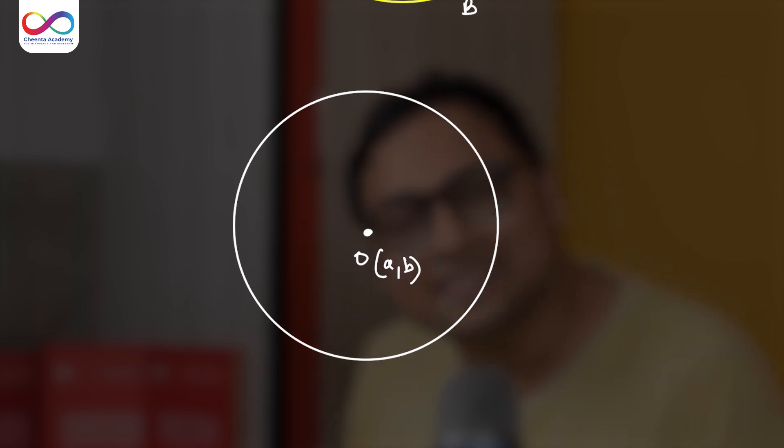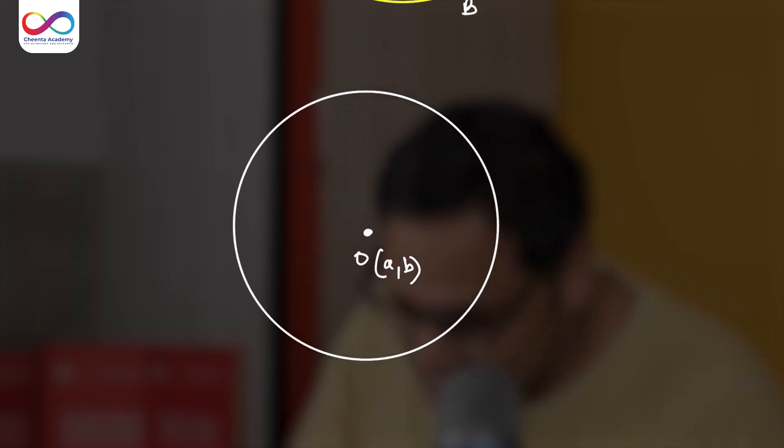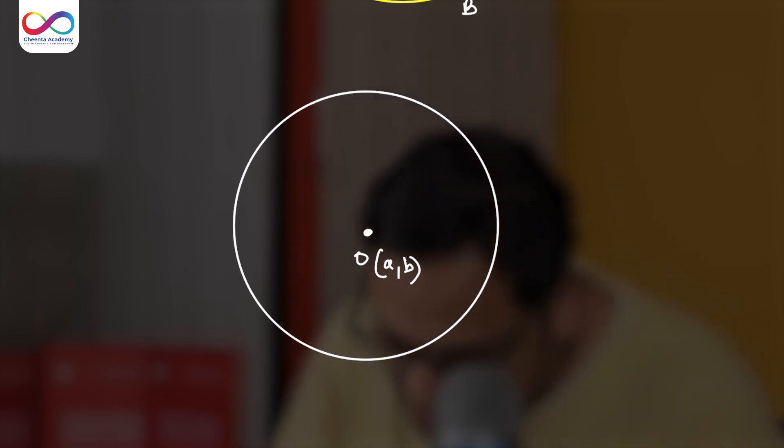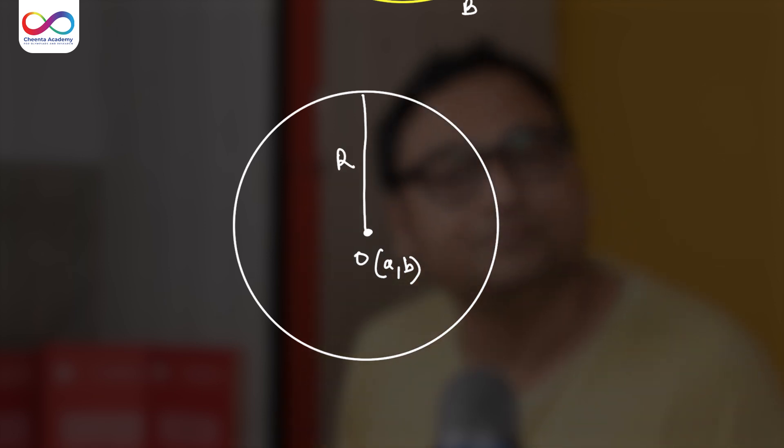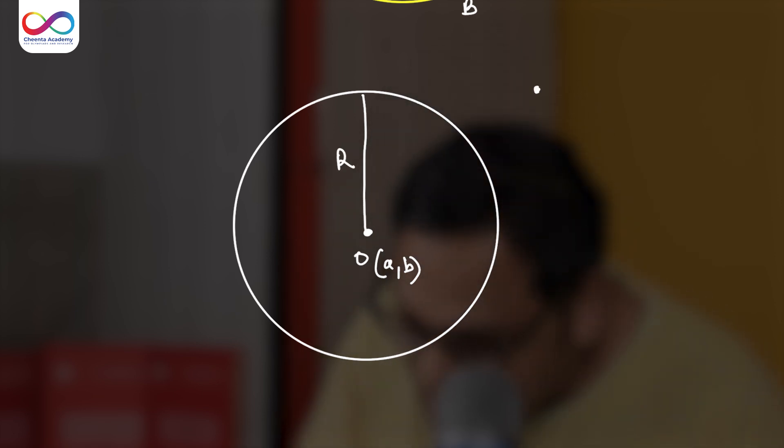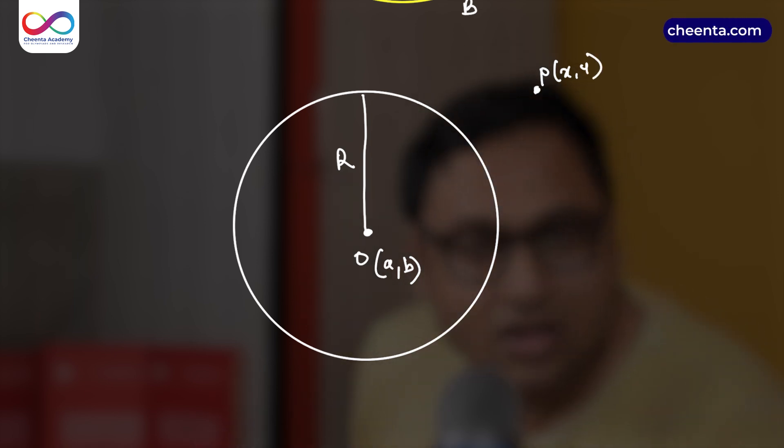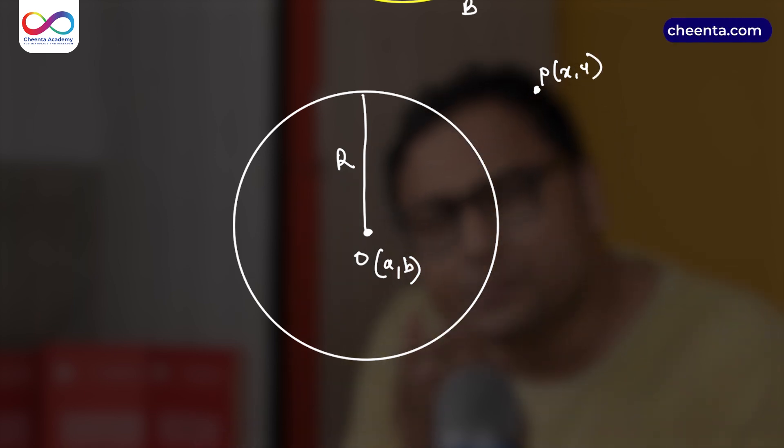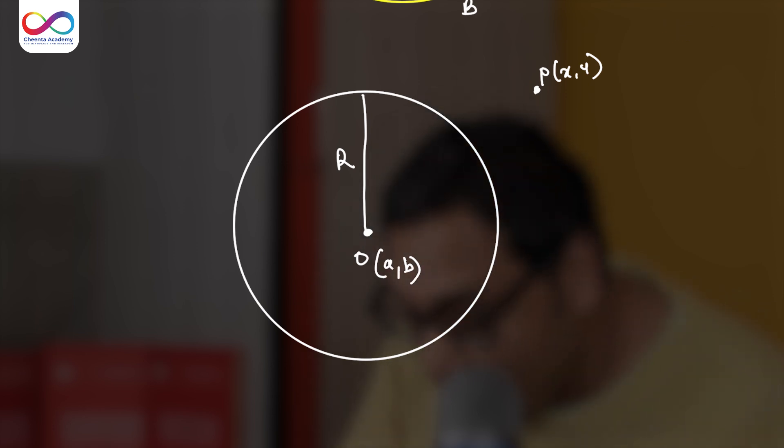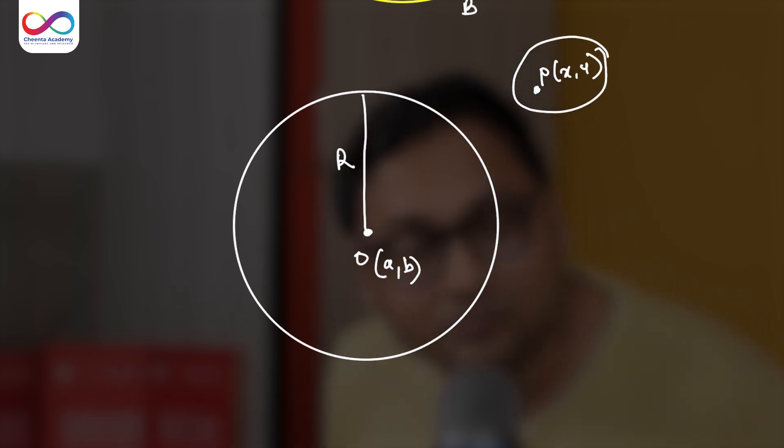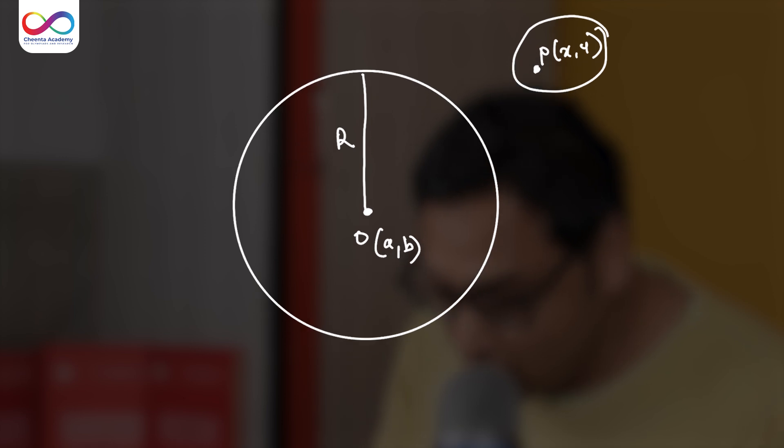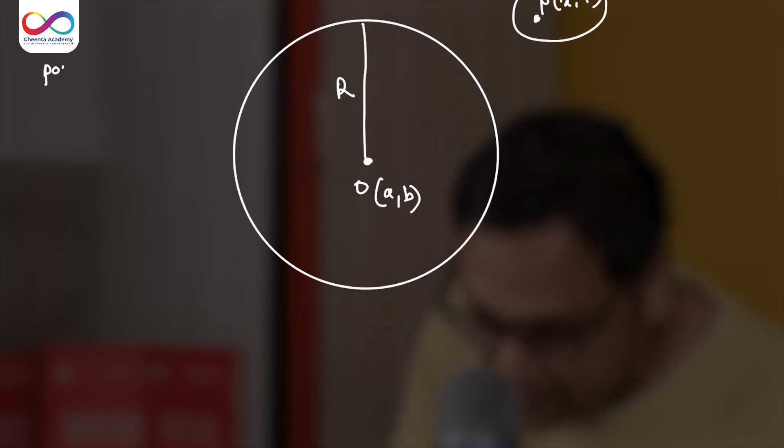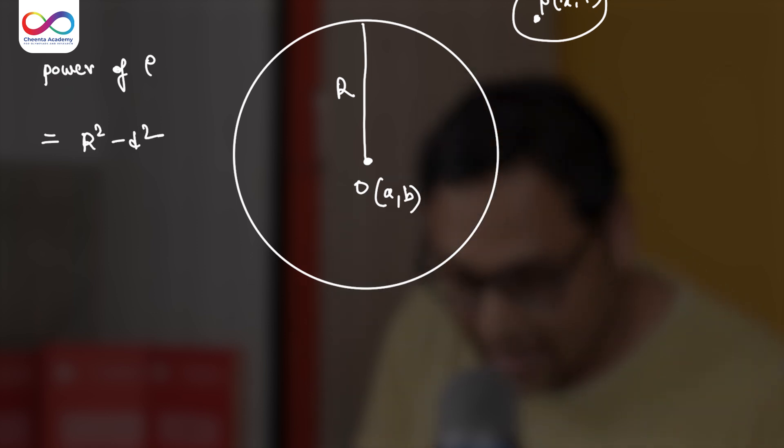Suppose this is the center of the circle O with the coordinate (a,b). The coordinate is (a,b). Suppose the radius of the circle is R and we take any point P with coordinates (x,y). What is the expression for the power of the point P with respect to the circle? Well, we know that the power of P equals R² minus D². Absolute value.